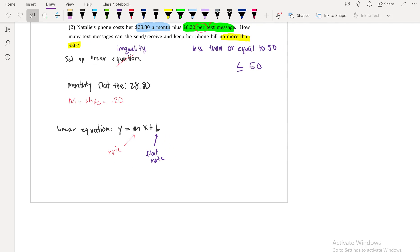So if that's the case, then you know how this is going to work out. You already have this has to be less than or equal to 50. That flat rate was $28.80. And so that m that you have, your rate, is that $0.20. And x is what you don't know. So you have .20x plus 28.80. Now this is the problem that you're trying to solve. So to get the x by itself, you're going to subtract 28.80 from both sides. So you can get .20x is less than or equal to, and now you have 50 minus 28.80, which gives you 21.20.